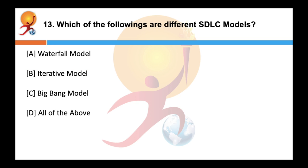Which of the following are different SDLC models or software development lifecycle models? Correct answer is all of the above. So there are several SDLC models available such as waterfall model, iterative model, spiral model, V model and big bang model etc.